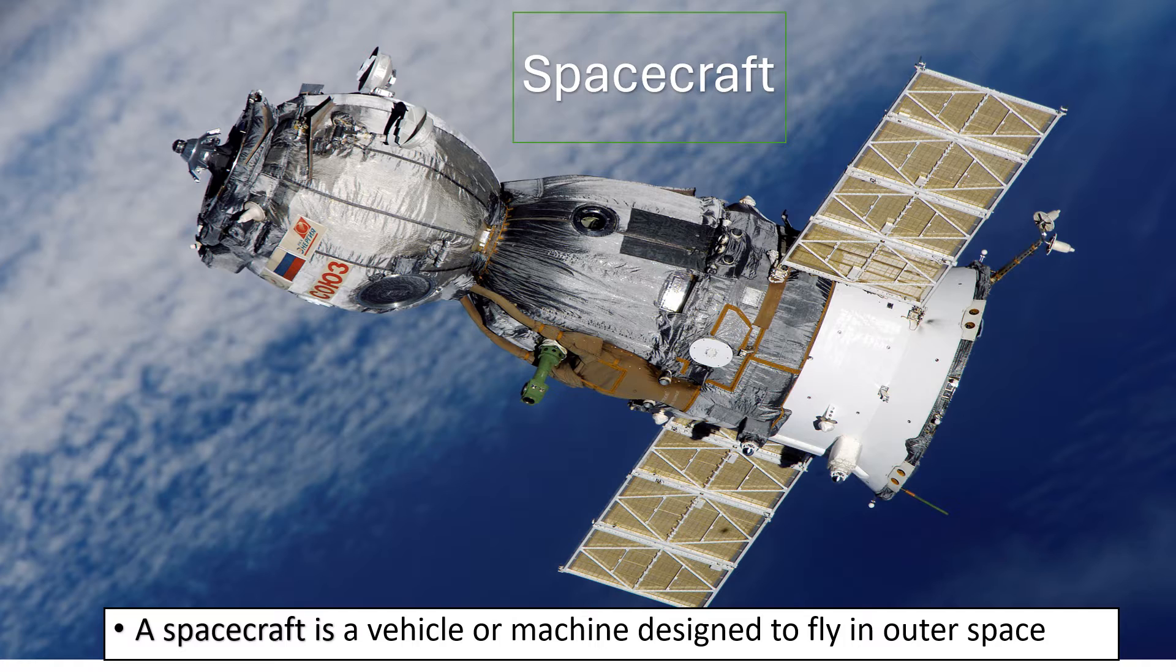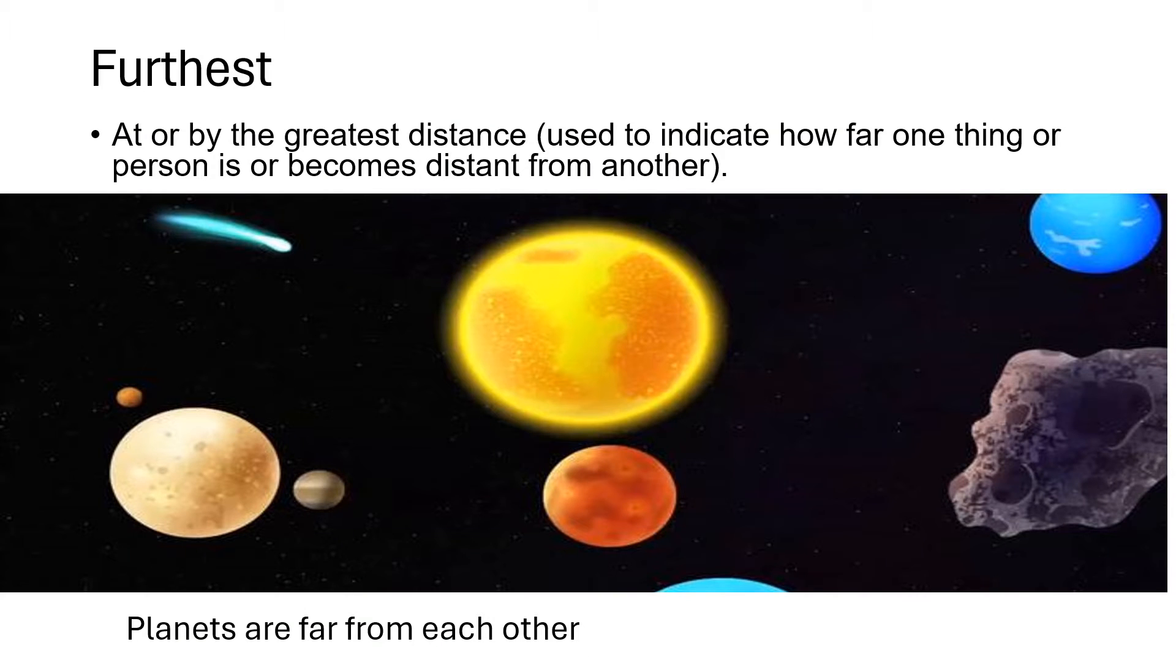Spacecraft: A spacecraft is a vehicle or machine designed to fly in outer space. Furthest: At or by the greatest distance, used to indicate how far one thing or person is or becomes distant from another. Planets are far from each other.